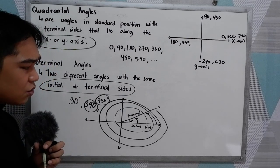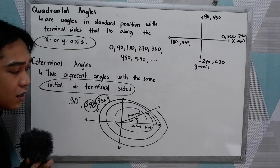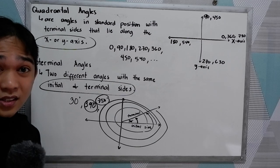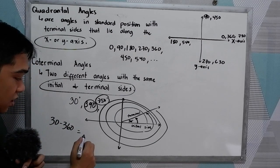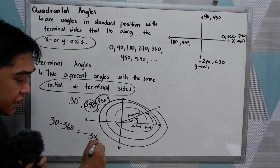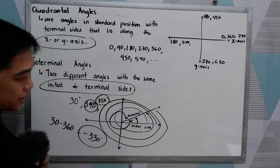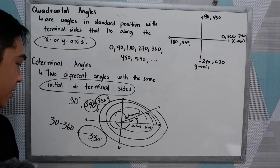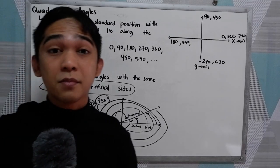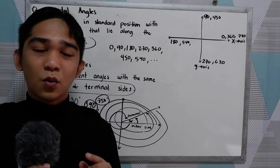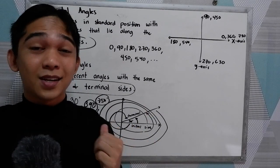And if you want to get the negative coterminal of 30 degrees, just subtract 360. So we have 30 minus 360, which equals negative 330 degrees. So if we're going to plot it, negative 330 is here. So that's the quadrantal angles and coterminal angles.